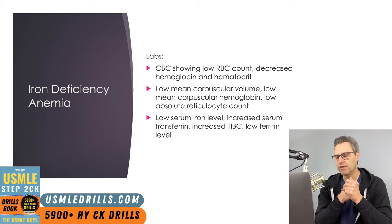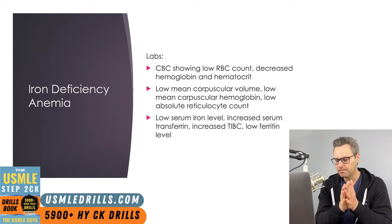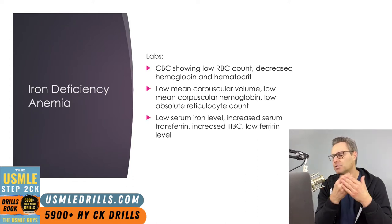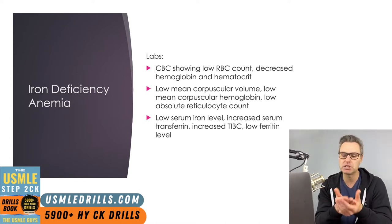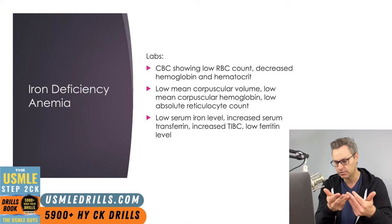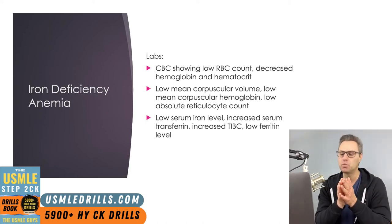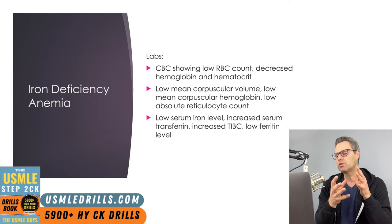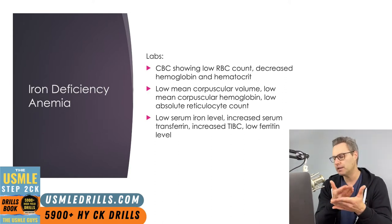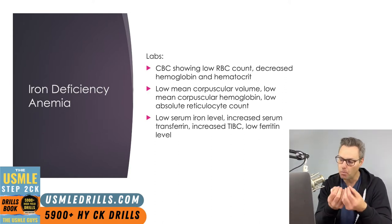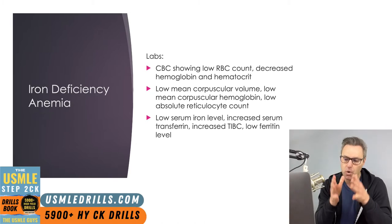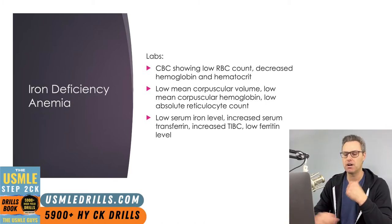These iron studies are fairly intuitive. Low serum iron means you are deficient. Transferrin is high because it's responsible for transporting iron to various tissues. TIBC is high because with iron deficiency there's more iron-binding capacity. And ferritin — an iron storage protein — is low because iron stores are depleted in this type of anemia.